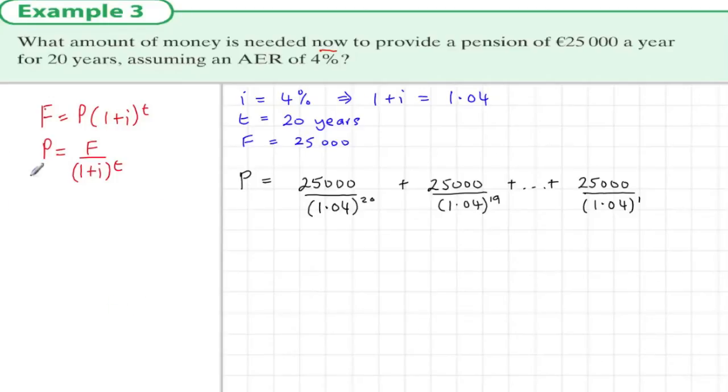So here we have a geometric series. We have term 20, term 19, down to term 1. In this series, the first term a is €25,000 divided by 1.04. This is €24,038. We also know that there are 20 terms and that the common ratio is 1 over 1.04. It's like we're dividing by 1.04 each time, and this is a geometric series.